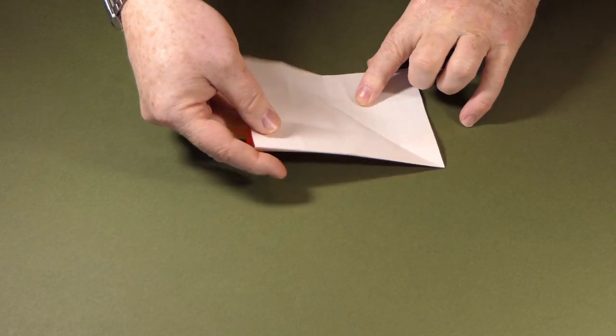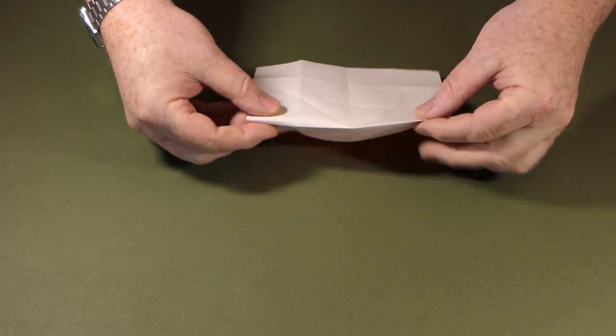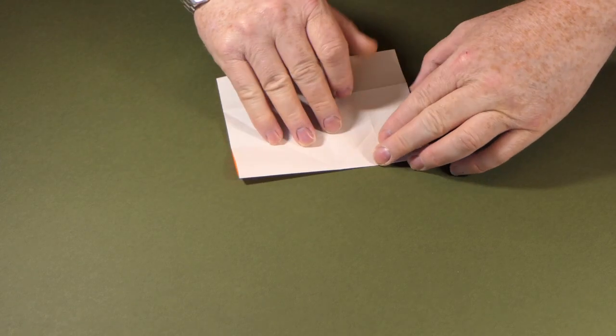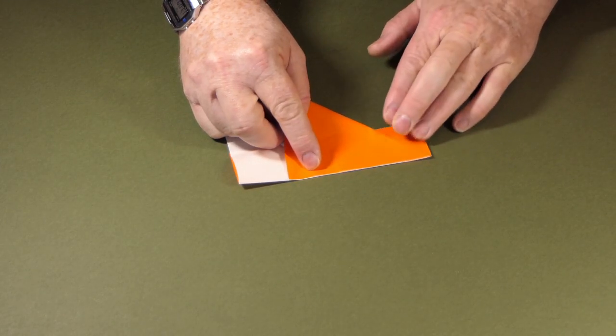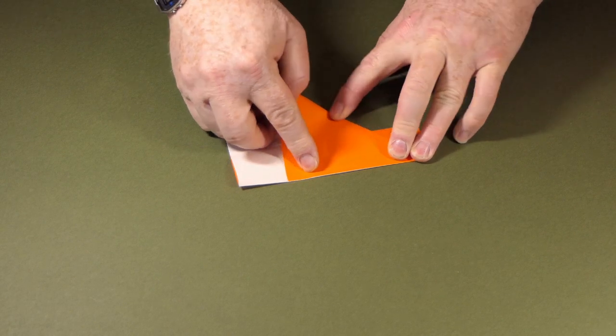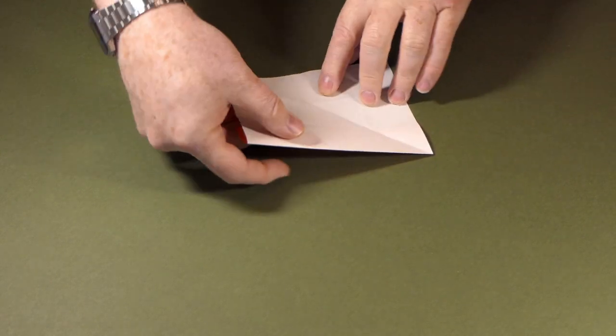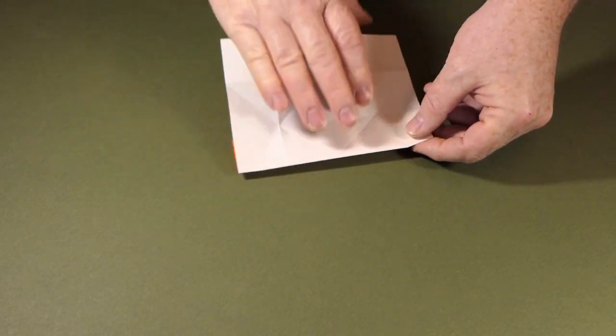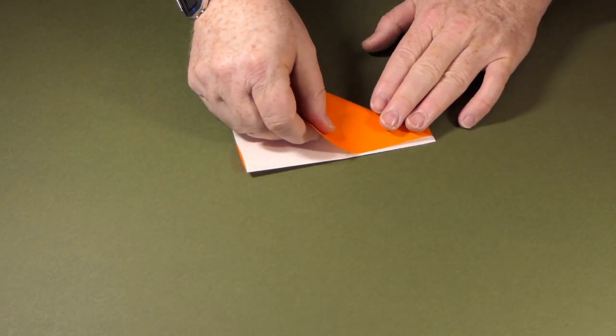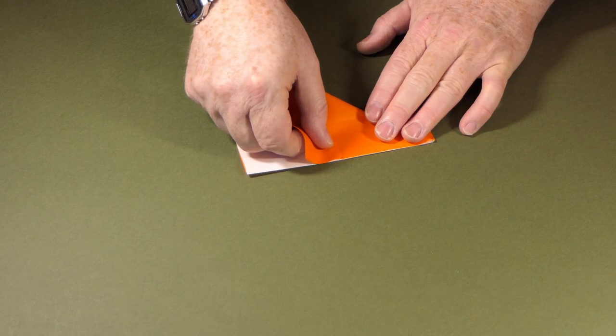Unfold, rotate, pop that over. Here's the third crease. Unfold, rotate and the final crease. This is all the pre-creasing we need for the module.